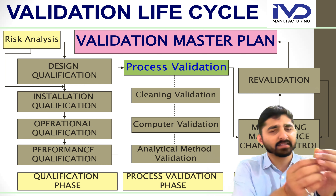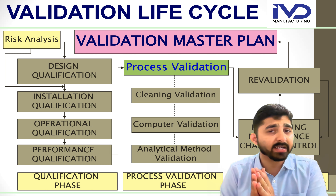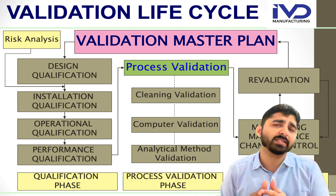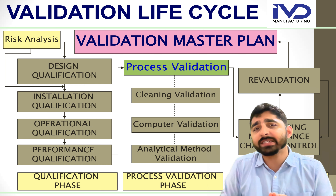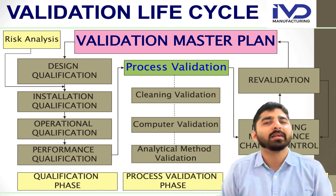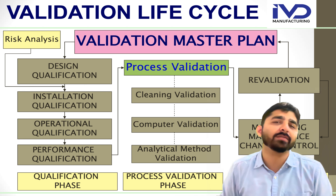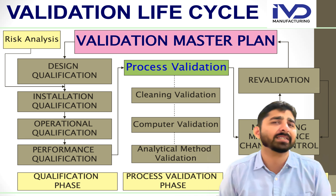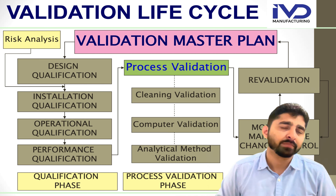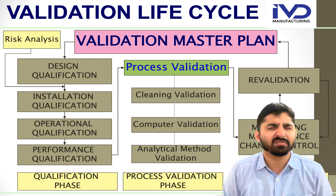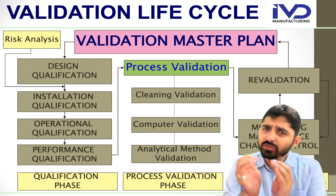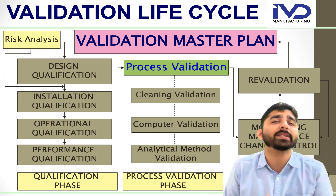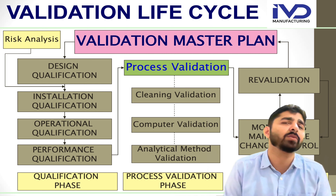Once the qualification phase and process validation phase are finished, I need to set up a frequency for the revalidation cycle based on the criticality of the processes. For example, in manufacturing a medical device such as an IVD — in vitro diagnostic — kit for a rapid test, there are critical processes like conjugation and drying processes. Since those processes directly impact the end result of the product, I need to determine at what duration I am going to conduct revalidation.